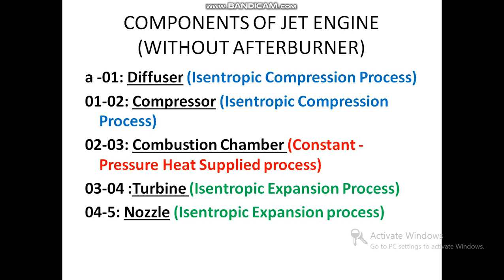The combustion chamber comes under the constant pressure heat addition process. The 03 to 04 process is the turbine. The main function of the turbine is to produce mechanical energy and to operate the compressor by connecting a single shaft between the turbine and the compressor. The turbine is also used to partially expand the flow from the combustion chamber, so it comes under the isentropic expansion process.